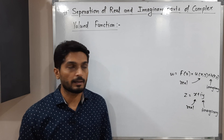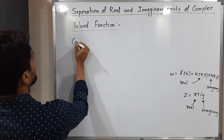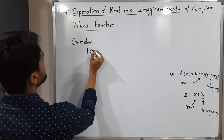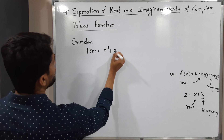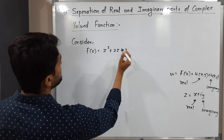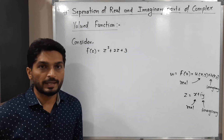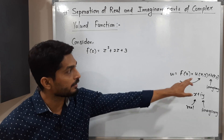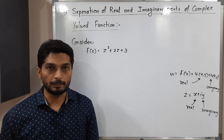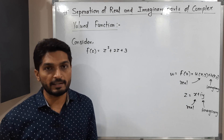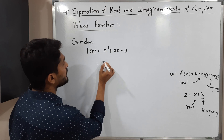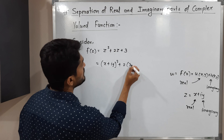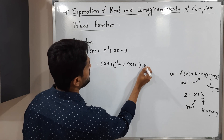Let us discuss one example. Consider f(z) equal to z squared plus 2z plus 3 — a very simple example. We have to find its real part as well as imaginary part, meaning we have to find u and v. Let us replace z by x plus iy everywhere: we get (x plus iy) squared plus 2(x plus iy) plus 3.